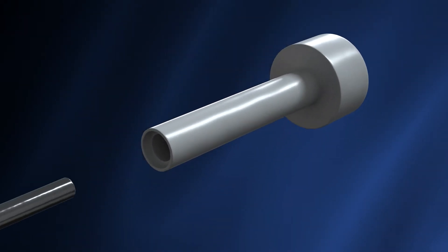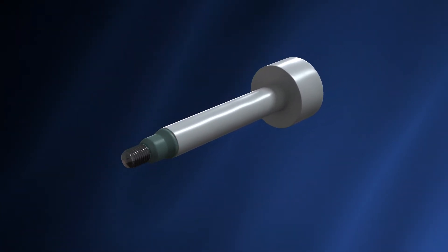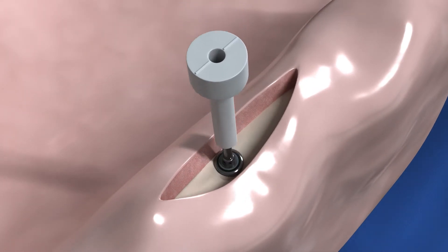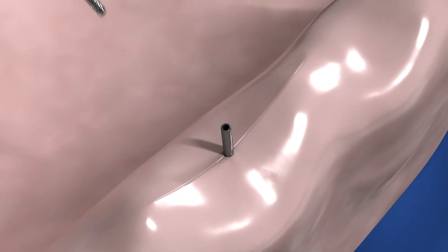Secure the Pathfinder to the implant immediately after implantation and before suturing. Suture the soft tissue and use a transmetal burr to remove the excess height of the irrigation tunnel, right above the mucosa.